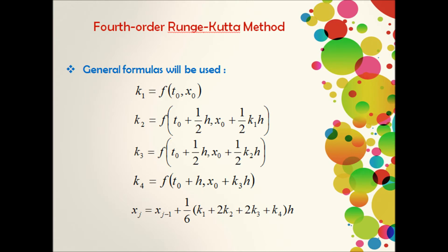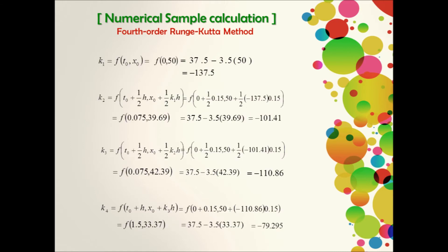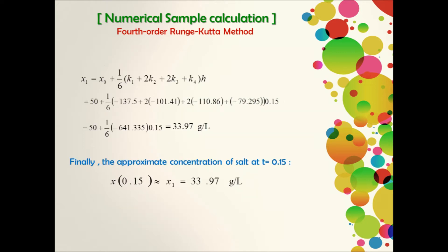This is the general formula of the Runge-Kutta method that we will use. We will show you how to find the solution after time equals 0.15 for this ODE problem. Here we found K1, K2, K3, and K4 by the previous formulas. Then we apply them in the final formula and by that we found the solution after time equal to 0.15.